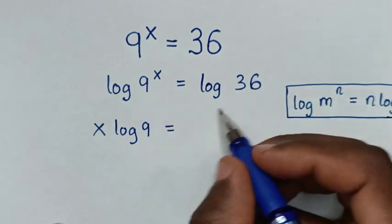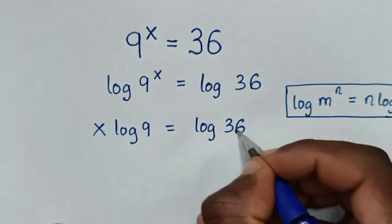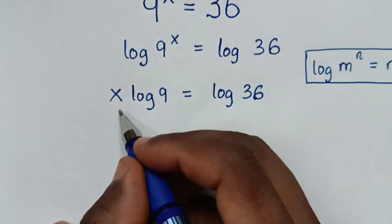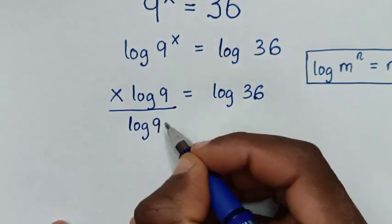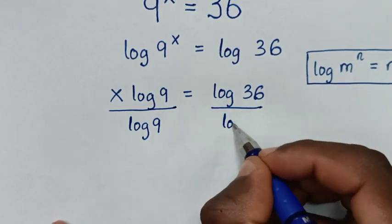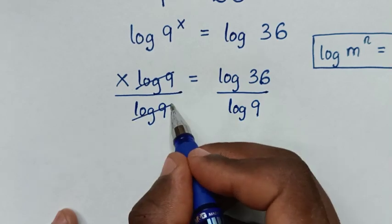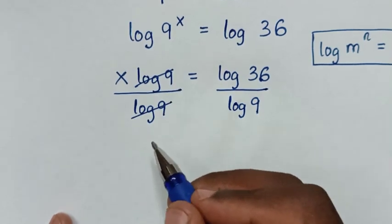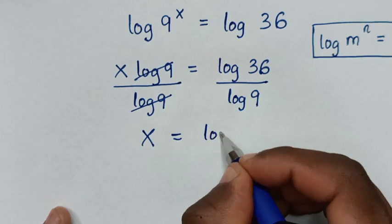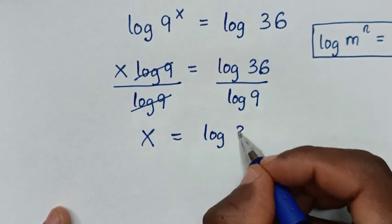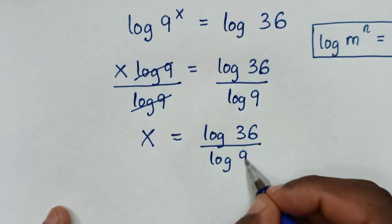Then it's equal to log of 36. Then we'll divide by log of 9 on both sides, so this log of 9 will cancel with this log of 9. Then it will be x is equal to log of 36 over log of 9.